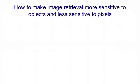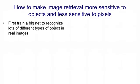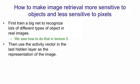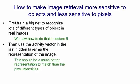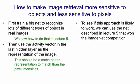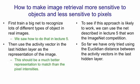So obviously we'd like the image retrieval to be more sensitive to the content of the image — the kinds of objects and their relationships — and less sensitive to the pixel intensities. We can do that by first training a big net to recognise lots of different kinds of objects in real images, as we saw in Lecture 5. Then we take the activity vector in the last hidden layer of the big net and use that as a representation of the image. This should be much better than pixel intensities at capturing information about the kinds of objects in the image. To see if this approach is likely to work, we used the net that won the ImageNet competition. So far we've only tried it with Euclidean distance between the activity vectors in the last hidden layer, but obviously if it works for that, we could then build an autoencoder on those to get them down to binary codes.